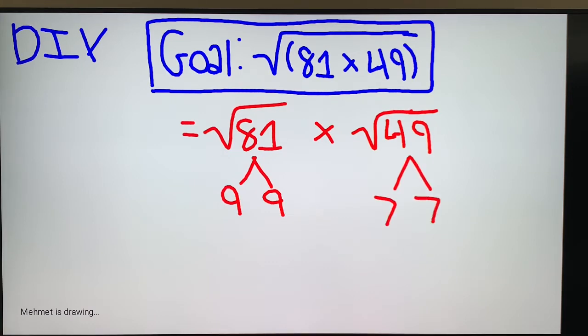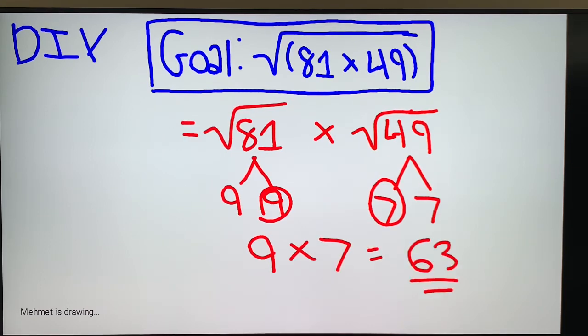Since we're taking the square root, we're going to take one of those two, and they get to come out of the square root. We're left with 9 times 7 equals to 63. And that is the value of this goal here.